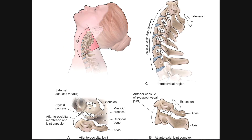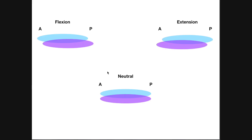Let's look at what happens during extension. This person is performing a full extension of the neck, approximately 85 degrees range of motion. But instead of upsloping, what we instead see is something called downsloping, which is pretty much the opposite.